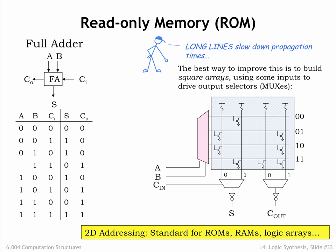We can reconfigure the circuit slightly, so that some of the inputs control the decoder, and the other inputs are used to select among multiple shorter and faster vertical columns. This combination of smaller decoders and output MUXs is quite common in these sorts of memory circuits.